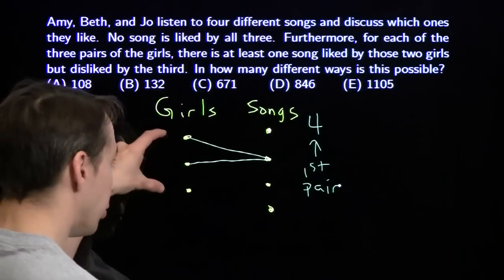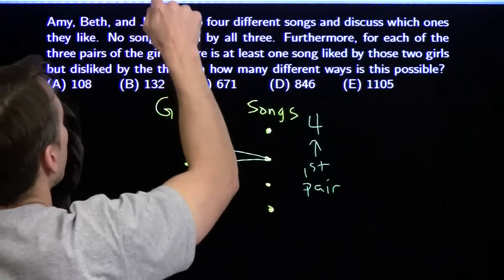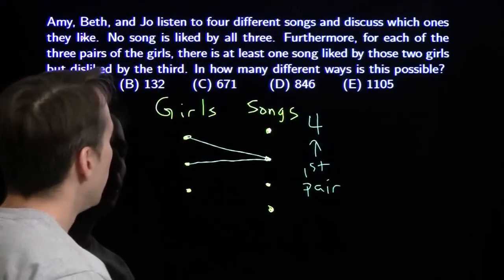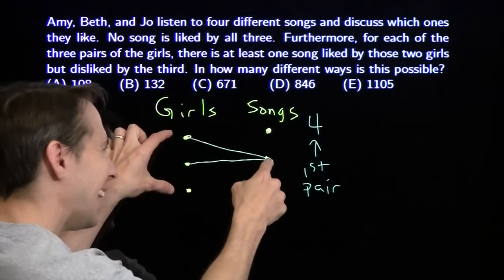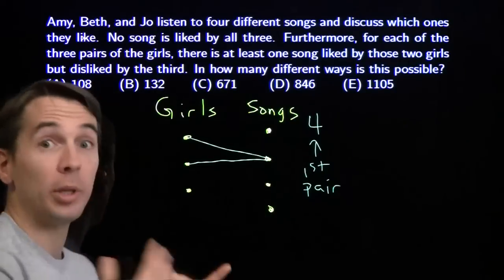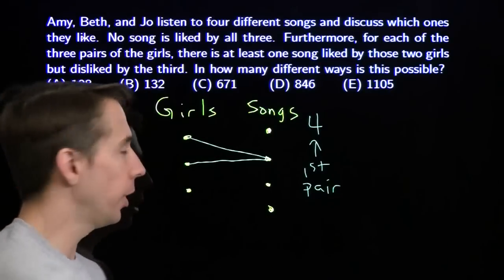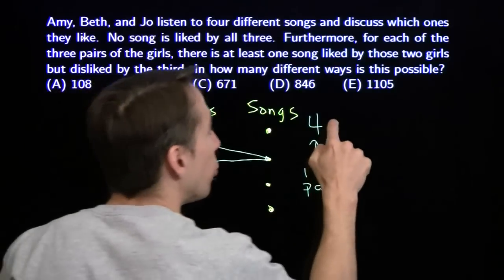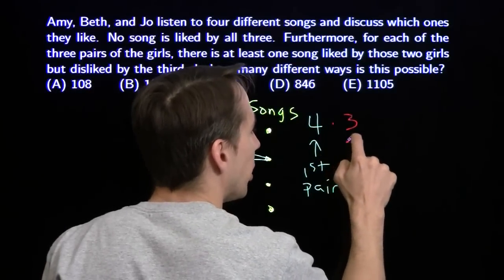Then we'll move on to the next pair of girls. Say this one and this one will make them red. This pair of girls can't like this song, because then this song will be liked by three girls, by all three girls, and no song is liked by all three girls. So there are three choices for the second pair.